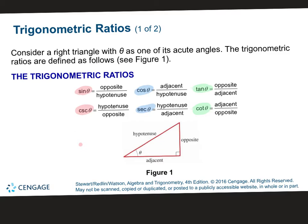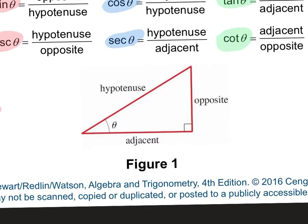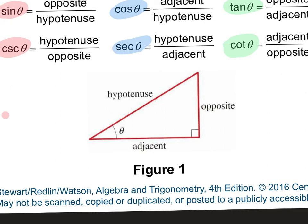When we work this out, my suggestion is when you get your triangle, always label the sides. The hypotenuse is always the longest side across from the right angle. Opposite is across from the angle theta that you're looking at. Adjacent is like next door — the side right next to the angle.